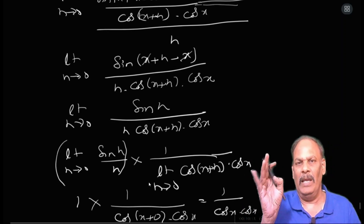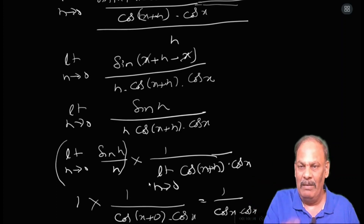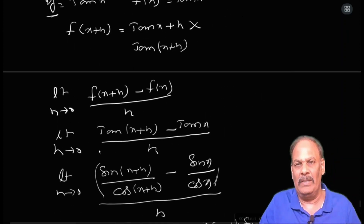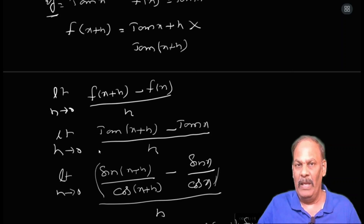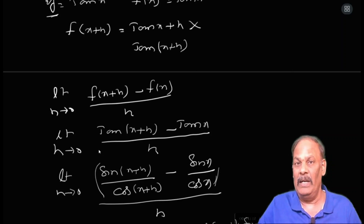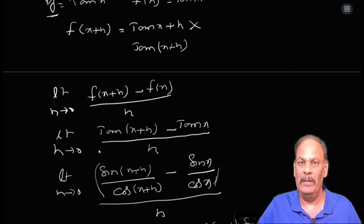This process is known as first principles, ab initio, from fundamentals, or formulae method — you can use any name. For every problem, the steps are the same: take the given function as f(x), find f(x+h), then apply limit h tends to 0 of [f(x+h) minus f(x)] / h, substitute the values, apply the required trigonometric formula, and don't forget limit theta tends to 0 of sin θ / θ equals 1. If you like this video, please like, share, and subscribe. Thank you.